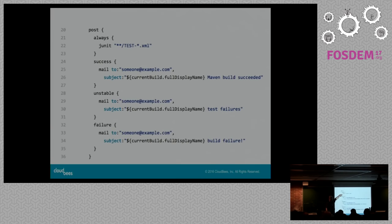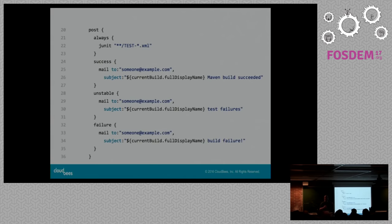There's also a 'changed' condition in case the build status changed from the previous build, and this is an extension point so more conditions can be added. For example: always gather JUnit test results; if successful, send a success email; if unstable, notify of test failures; if failed, notify of build failures. The post section can be attached to an individual stage so you get emails based on that stage's results specifically — useful for archiving unit test results even if the build fails, or for running cleanup after integration tests.